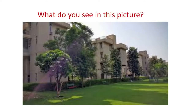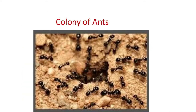What do you see in this picture? Yes, it is a colony or a residential area. A colony is a place where houses are located. Did you know that a group of ants is also called a colony of ants? Isn't it interesting? Yes, it is.